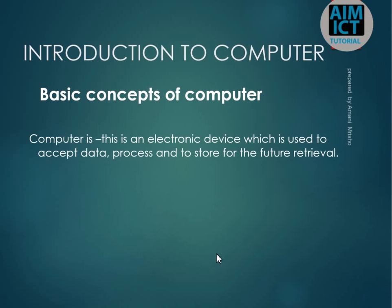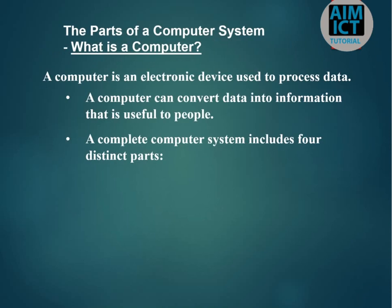The important issues in computing are input, process, output, and storage. According to the definition, what we input is data, and what we get as output is information. The computer system involves hardware, software, users, and data. A computer can convert data into information.